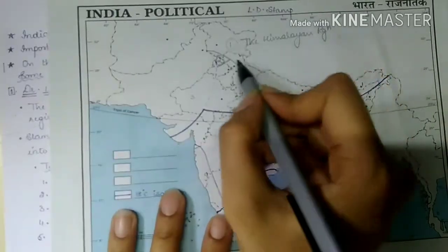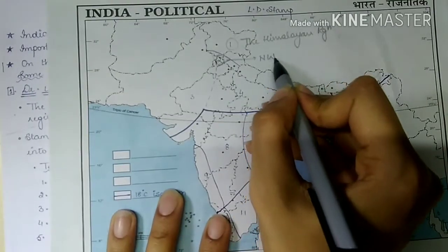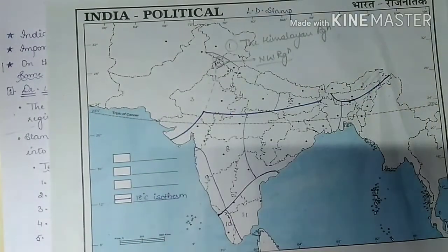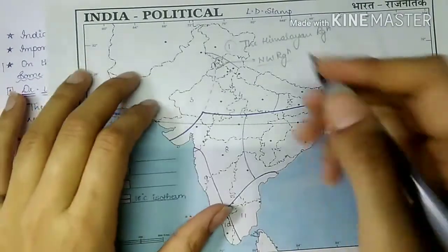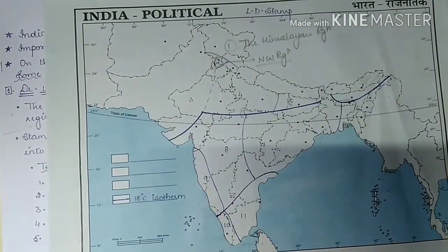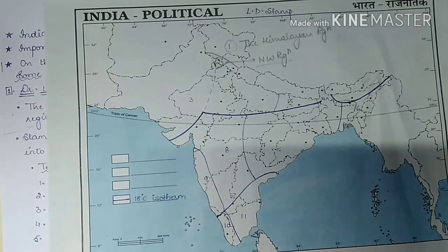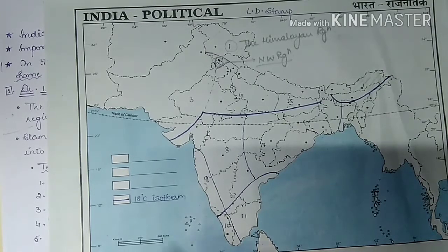The second region is the northwestern region, which has a triangular shape. It includes the northern part of Punjab and the southern part of Jammu and Kashmir. The temperature here is 16 degrees Celsius in winters and rises to about 24 degrees Celsius in summer. Amritsar is the representative city.